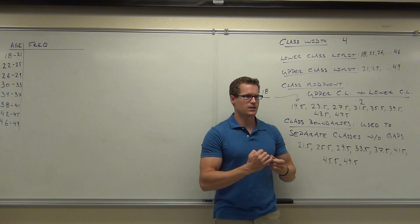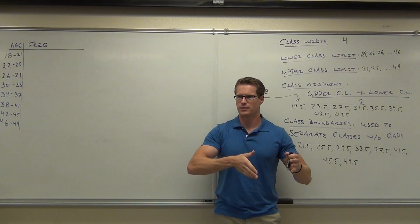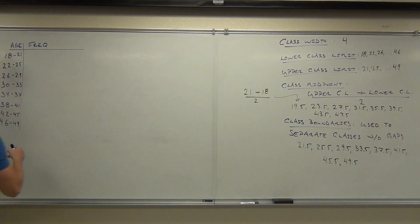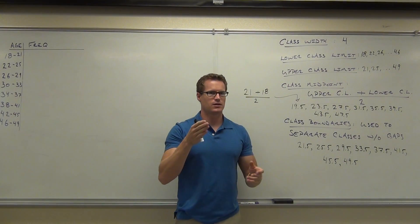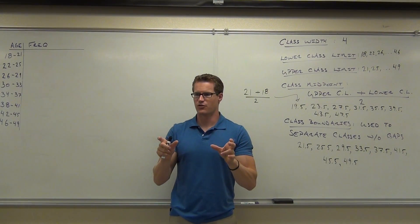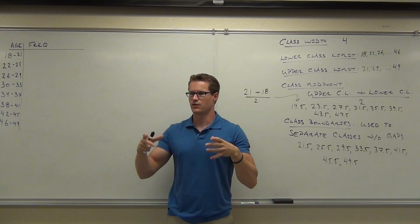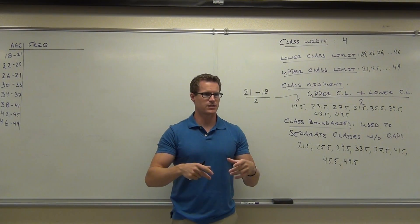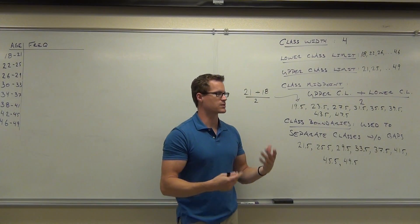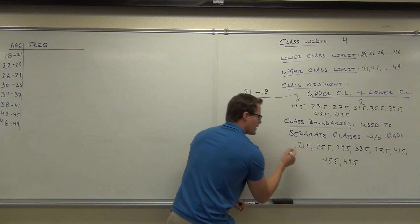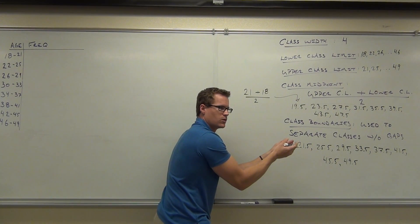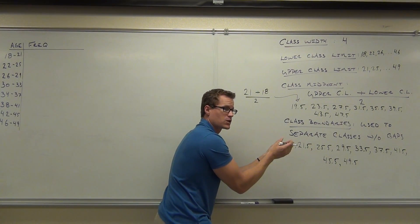Notice that these class boundaries are really like slicing up a loaf of bread. We have this loaf of bread that goes from 18 to 49, and we're slicing it up here, here, here, here, here, here, and here. If you have a loaf of bread and you slice it, you're going to get one more piece of bread for however many slices you make. If you slice it once, you have two slices. Slice it three times, you're going to have four slices. So can you tell me what the very first class boundary is going to be?